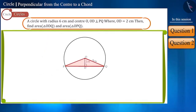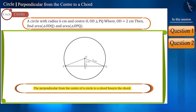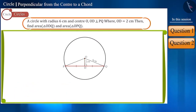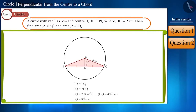Now, we have to find the area of triangle OPQ. There are many ways to find this. Since line segment OD is perpendicular to chord PQ and O is the center of the circle, a perpendicular drawn from the center of a circle to a chord bisects the chord. Therefore, PD is equal to DQ, and we can write PQ accordingly. We found DQ as 4√2 cm, so chord PQ will be 8√2 cm. Now find the area of triangle OPQ yourself.